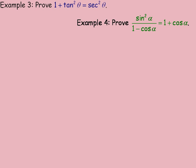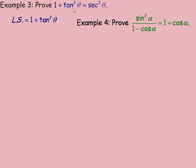Flipping to the third page — the last page with examples. In example three, we're asked to prove that 1 + tan²θ equals sec²θ. The larger side is the 1 + tan²θ side, so we start there. Remember from the first page, tan is the same as sin over cos. So in place of tan²θ, we substitute sin²θ / cos²θ.